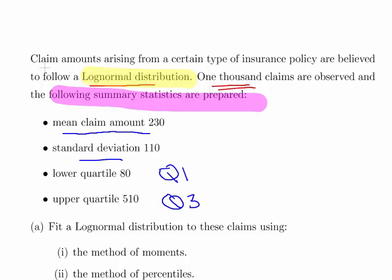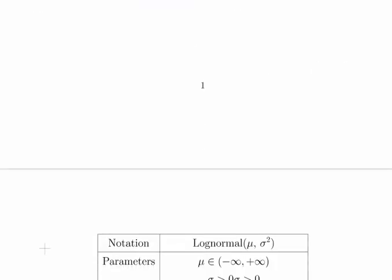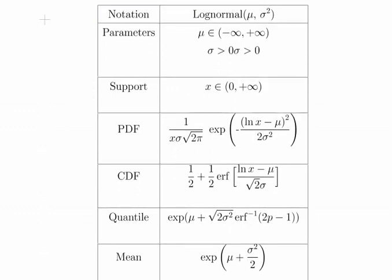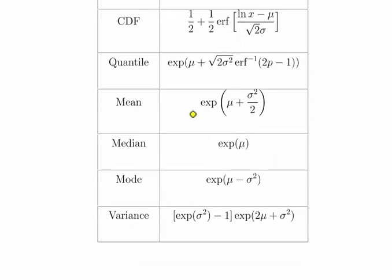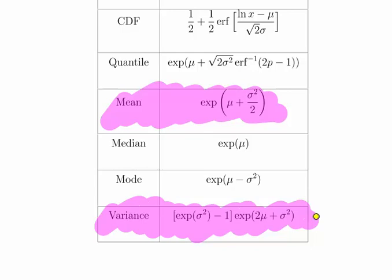We need to fit a log-normal distribution to this data set using the method of moments and then the method of percentiles, then compare the fit distributions from each part. Here we have a set of formulas, and the key things we want are the mean and the variance, which is the standard deviation squared. Those are the two key ones we'll be using for the method of moments calculation.